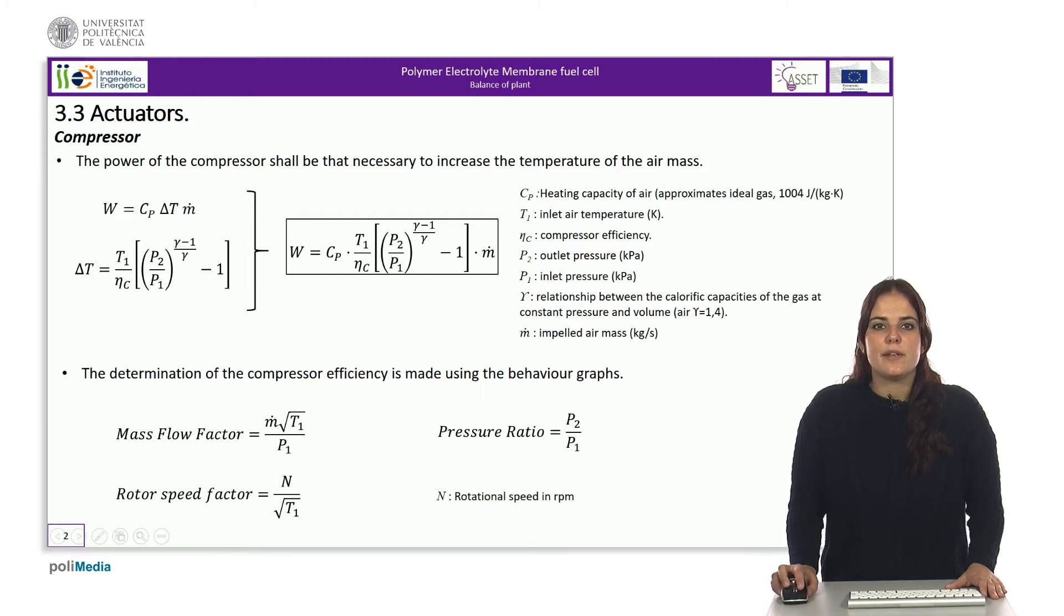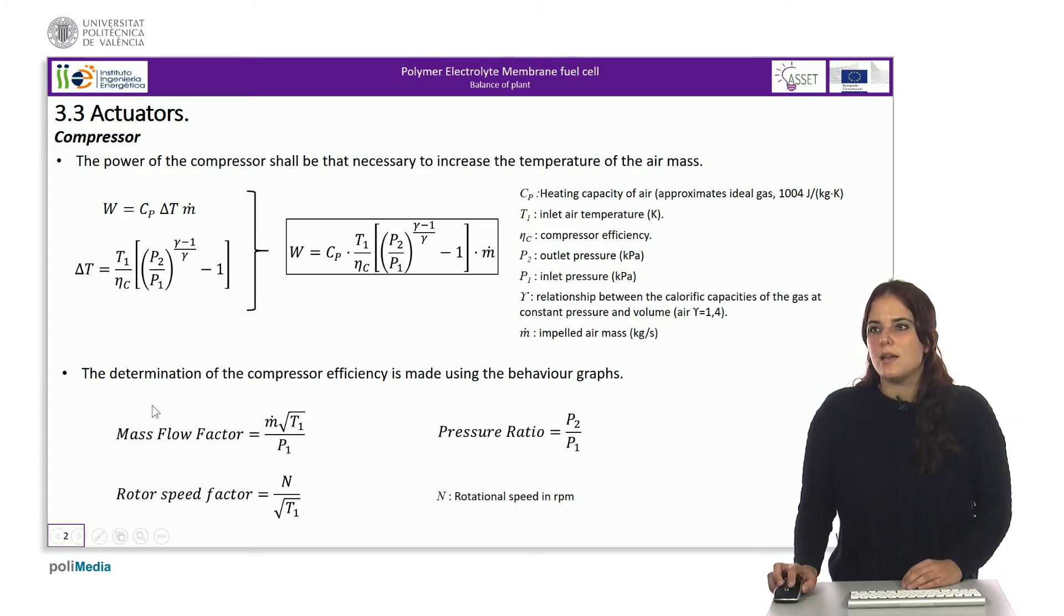If the calorific capacity of the air is close to that of an ideal gas, then the power required to increase its temperature will be that defined by the expression, where, in addition to an increasing temperature, we can find the mass flow of air.